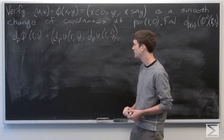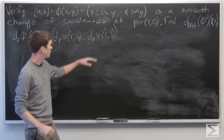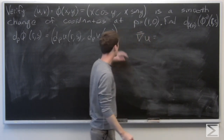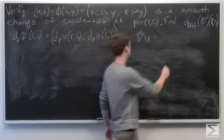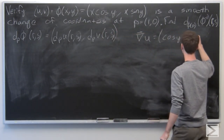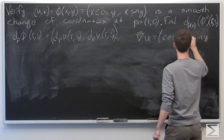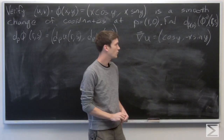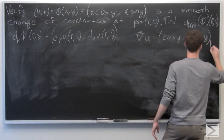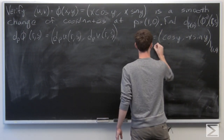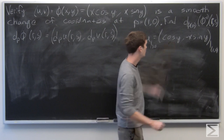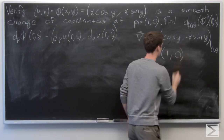We can calculate the total derivative of u, which is the first component. The gradient vector of u is the partial derivative of u with respect to x and the partial derivative of u with respect to y, giving us (cos y, -x sin y). Evaluating at p = (1, 0): cosine of 0 is 1, sine of 0 is 0, so the gradient vector of u at p is (1, 0).